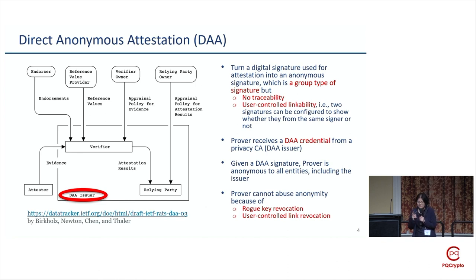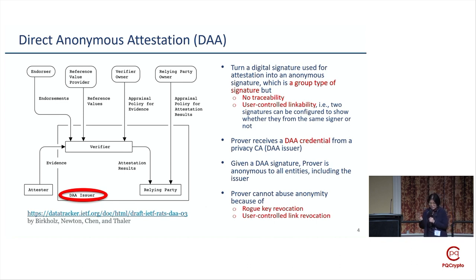We also want strong anonymity — meaning if two verifiers deal with the same user, they cannot be linked. They can only individually link a user with themselves. To balance security and privacy, we want to stop attester abuse. For pure anonymity, an attester could do something bad and walk away — nobody knows who they are. So we want to stop this.